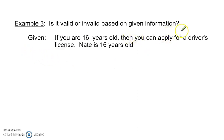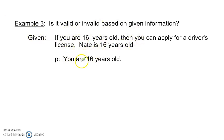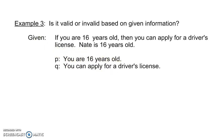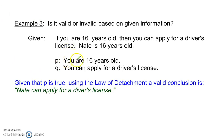Is it valid or invalid? If you are 16 years old, then you can apply for a driver's license. Nate is 16 years old. Our hypothesis is: if you're 16 years old, you can apply for a driver's license. Given that p is true, we can use the law of detachment to make a valid conclusion that Nate can apply for a driver's license.